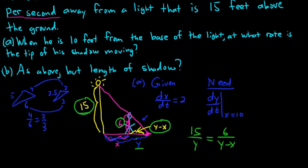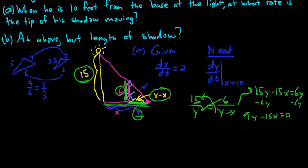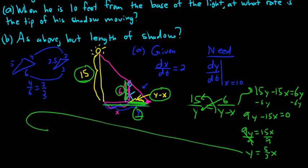So 15/y equals 6/(y − x), because the whole base piece is y. Cross-multiplying and distributing the 15 gives 15y − 15x = 6y. Subtracting 6y: 9y − 15x = 0. Adding 15x: 9y = 15x. Dividing by 9: y = (5/3)x.